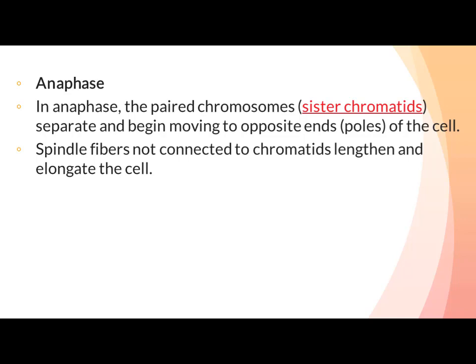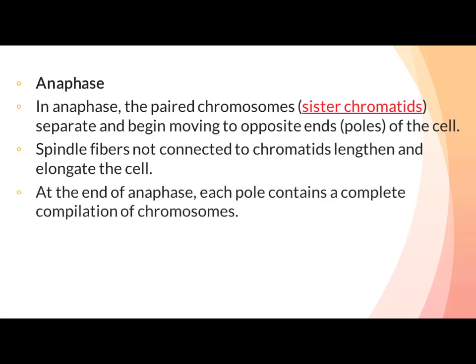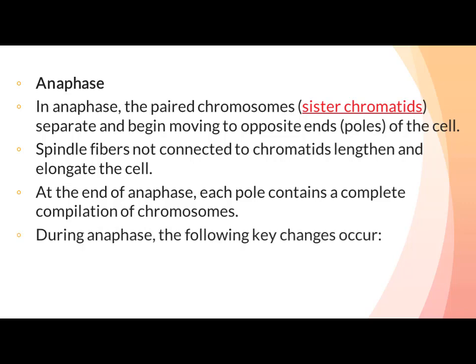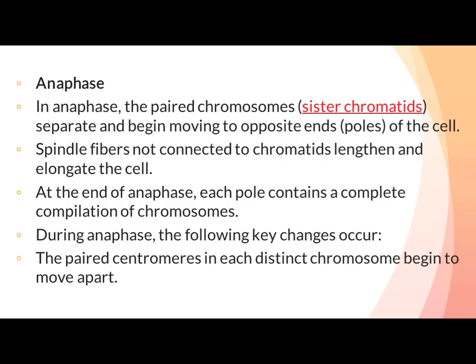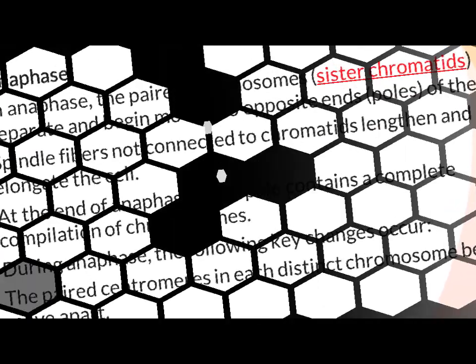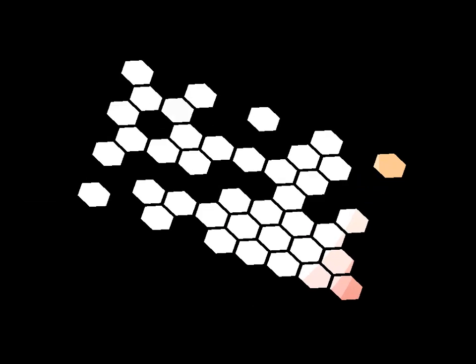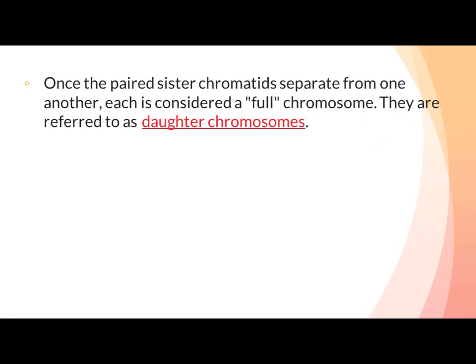At the end of anaphase each pole contains a complete compilation of chromosomes۔ During anaphase the paired centromeres in each distinct chromosome begin to move apart۔ Once the paired sister chromatids separate from one another, each is considered a full chromosome۔ Chromosome جب centromere پر الگ ہو جاتے ہیں تو ایک chromosome سے دو chromosome بن جاتے ہیں۔